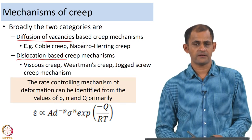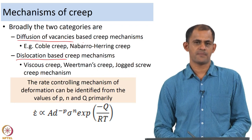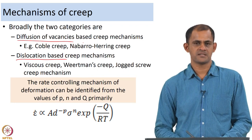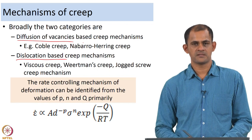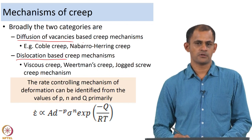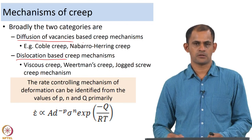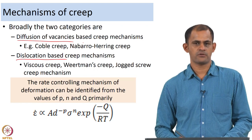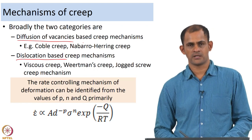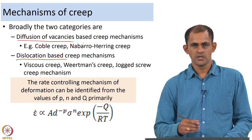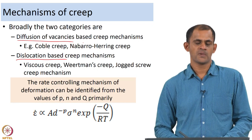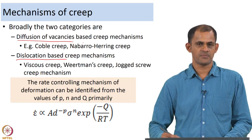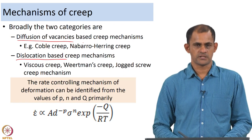On the other hand, when we say dislocation-based creep mechanisms, the known mechanisms are viscous creep mechanism, then we have Weertman's creep which is also known as power law creep, and we also have a variant of this called the jogged screw creep mechanism. These are some common creep mechanisms used to explain plastic deformation through dislocations.